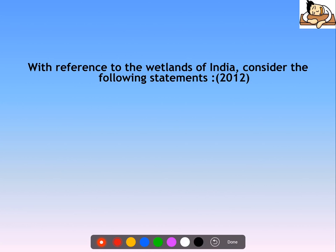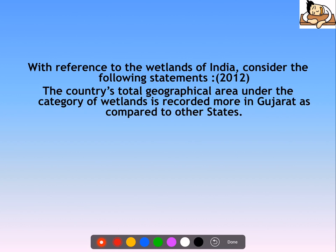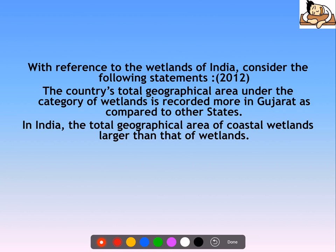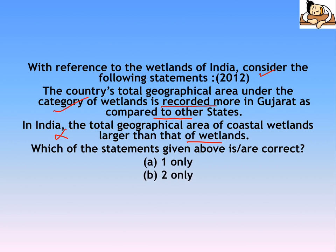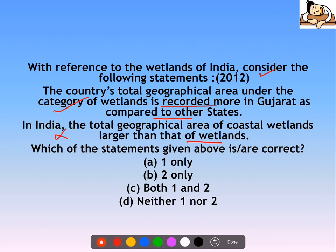The last question: with reference to wetlands of India, a factual question appeared in 2012. The country's total geographical area under wetlands is recorded more in Gujarat compared to other states — this is correct. However, the statement that India's total geographical area of coastal wetlands is larger than that of inland wetlands is not true — that statement is wrong. Revise previous year questions as there is a higher chance of repetition. That's all for today, thank you.